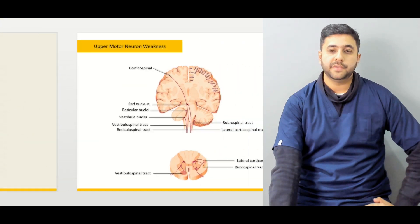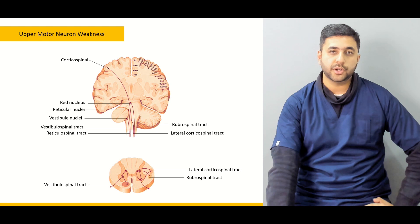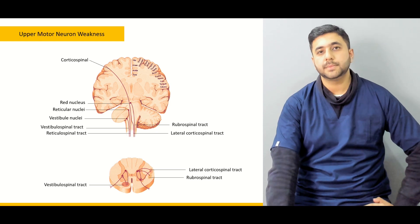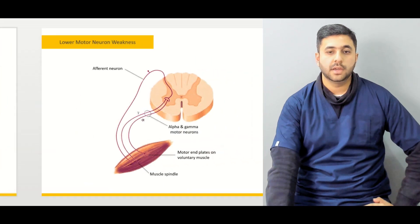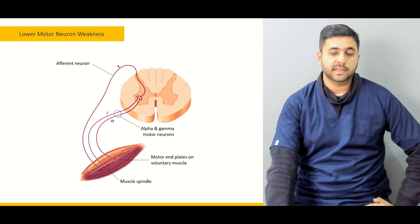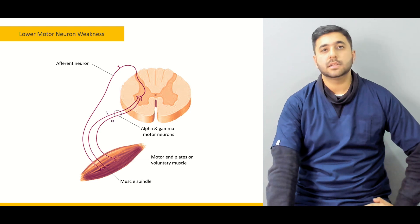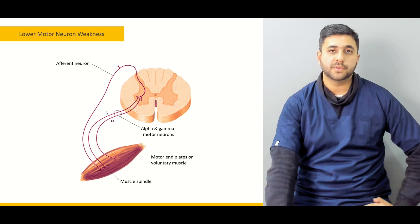Afterwards, after defining the terms, we are going to start off by discussing the upper motor neuron — what are the various signs and symptoms of upper motor neuron weakness, how do we differentiate it from other presentations, and how do we differentiate the lower motor neuron weakness and what are the various areas of the central nervous system that comprise lower motor neuron weakness.